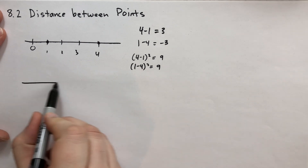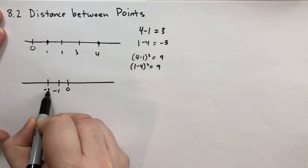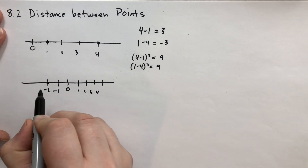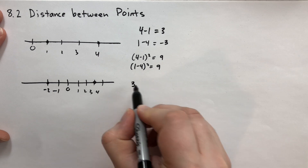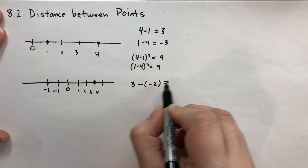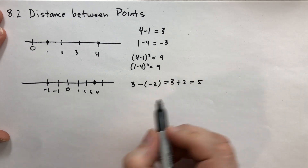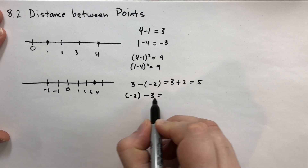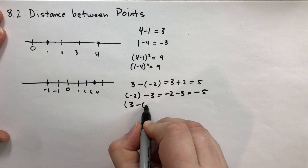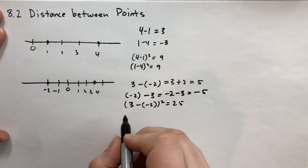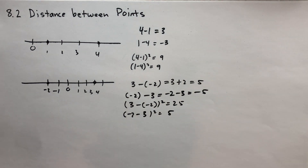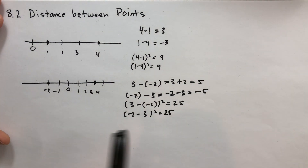Let's try what happens if we use negative points. We have zero, negative one, negative two, and going up to three and four. The distance between the point at negative two and the point at three: we take three minus negative two — remember, you're taking the minus of a negative — which is the same as three plus two, equal to five. Going the other way: negative two minus three equals negative five. But if we square both, we get 25 each time.